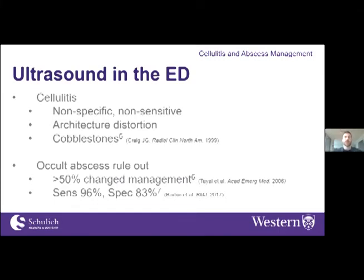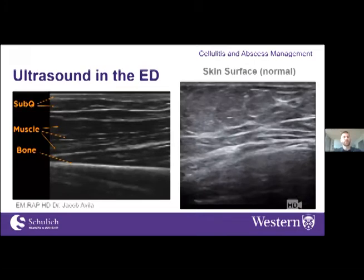Ultrasound for cellulitis is neither sensitive nor specific but has some suggestive findings including architectural distortion and cobblestoning. More usefully, ultrasound can rule out or identify abscesses. A 2006 study by Tayal et al. showed that when cellulitis was diagnosed without obvious abscess, subsequent ultrasound led to a change in management 56% of the time — mainly abscess I&D. A 2017 Canadian meta-analysis showed ultrasound had 96% sensitivity to rule out abscess and 83% specificity.